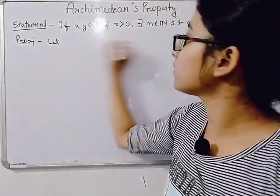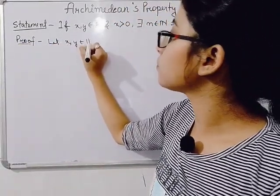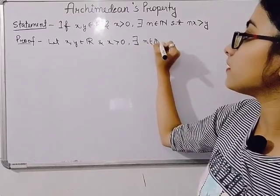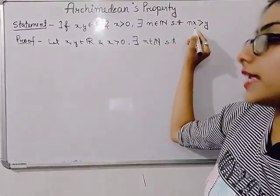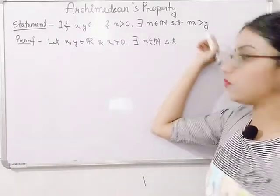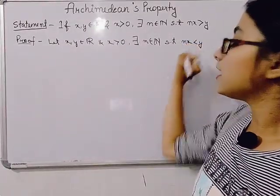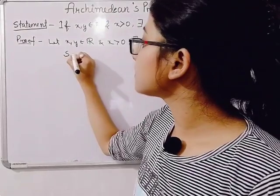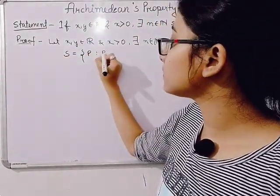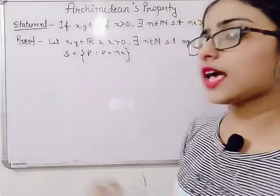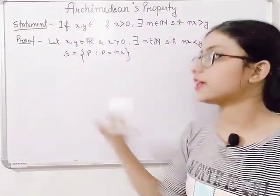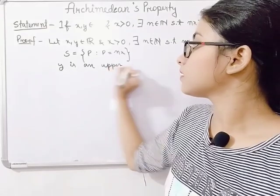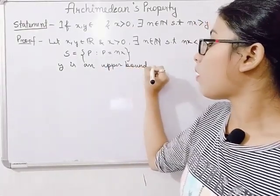Let us first write that x, y belong to the real numbers and x is greater than 0, then there exists n belonging to the natural numbers such that nx is less than y — this is our assumption. Now, we define a set S = {nx : n ∈ ℕ}, and we say that y is an upper bound of S.